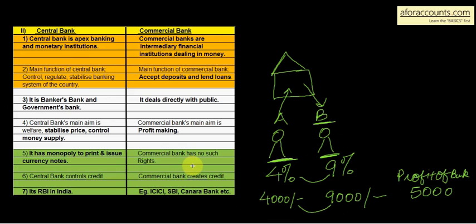Sixth: Central bank controls credit. Bahut important point objective ke liye bhi. Credit ko kaun control karta hai? Central bank. Commercial bank creates credit. So commercial bank creates credit.